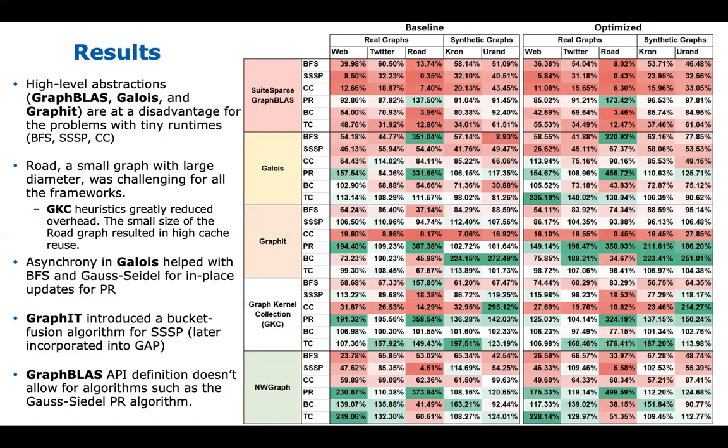GraphIt initially dominated Single Source Shortest Path by introducing the bucket fusion algorithm. Scott Beamer recognized it and added it to the GAP baseline, which improved GAP's SSSP performance — meaning GraphIt's improvement actually prevented them from having an all-green row for that algorithm. That's worth calling out as a real contribution.